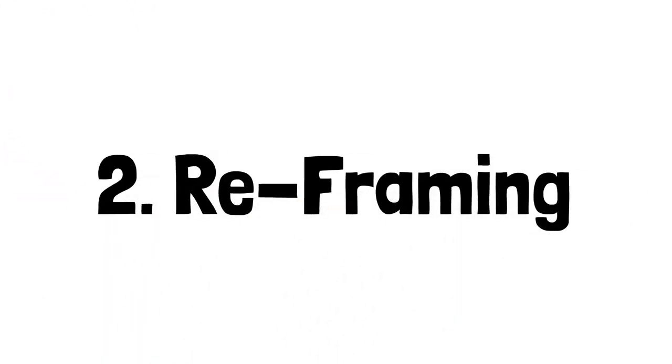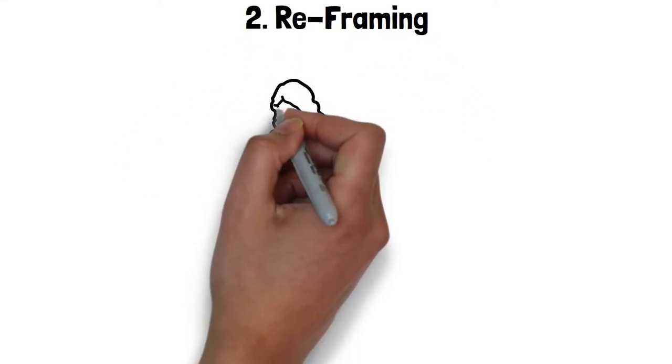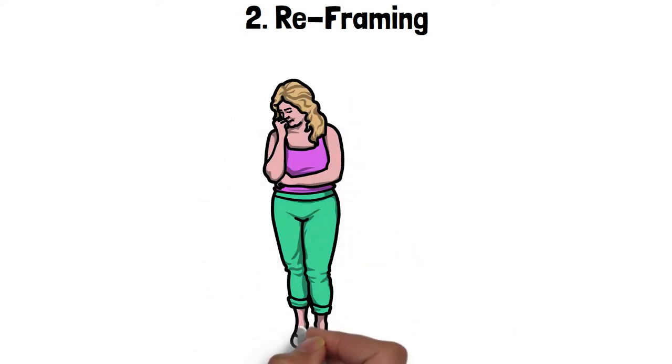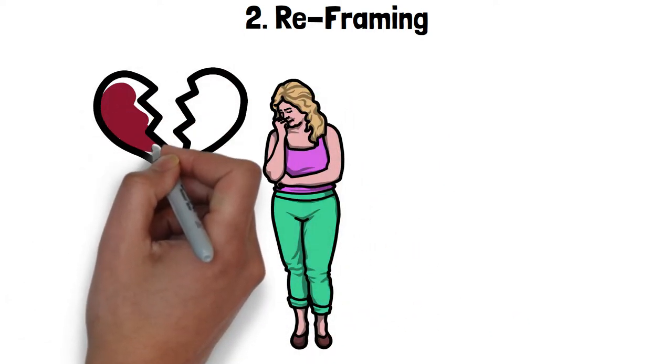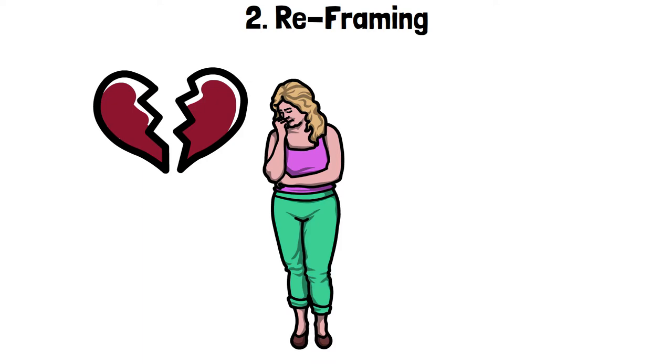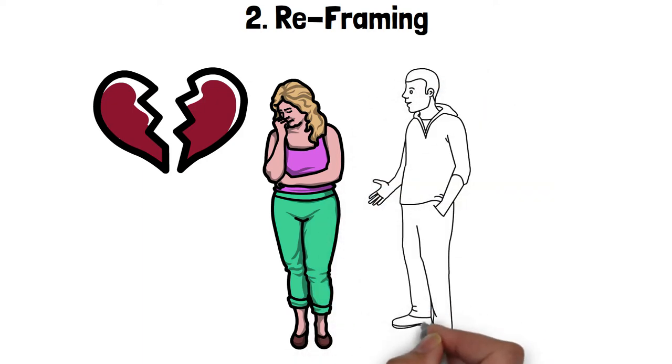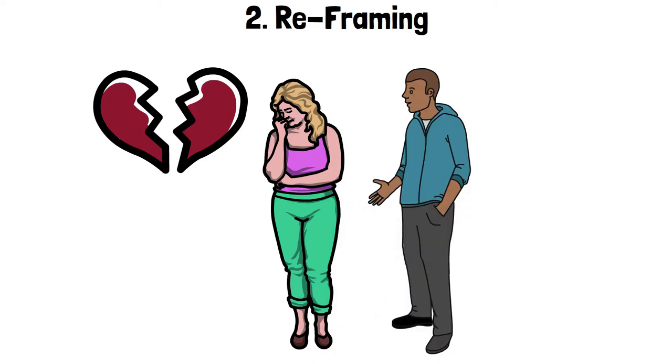Number two, reframing. Tony Robbins says that reframing happens when someone has a problem and you change what it means to get them to see it in a different way. So let's say your friend complains about the dates he's been going on. And that every time he goes on a date, it's a complete failure. Then you might say something like, well, maybe God is protecting you from these men because he has someone special lined up for you.